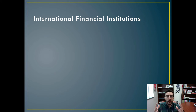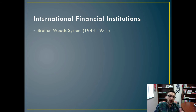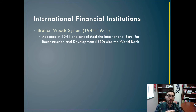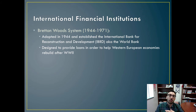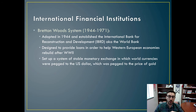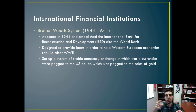International financial institutions — what do they do? From roughly the end of World War II through 1971, we had the Bretton Woods system, adopted in 1944. It established a couple of key institutions: the International Bank for Reconstruction and Development, also known as the World Bank, which provided loans to help Western European countries rebuild their economies after World War II. It also set up a stable system of exchange in which world currencies were pegged to the U.S. dollar, and the U.S. dollar was then pegged to the price of gold.